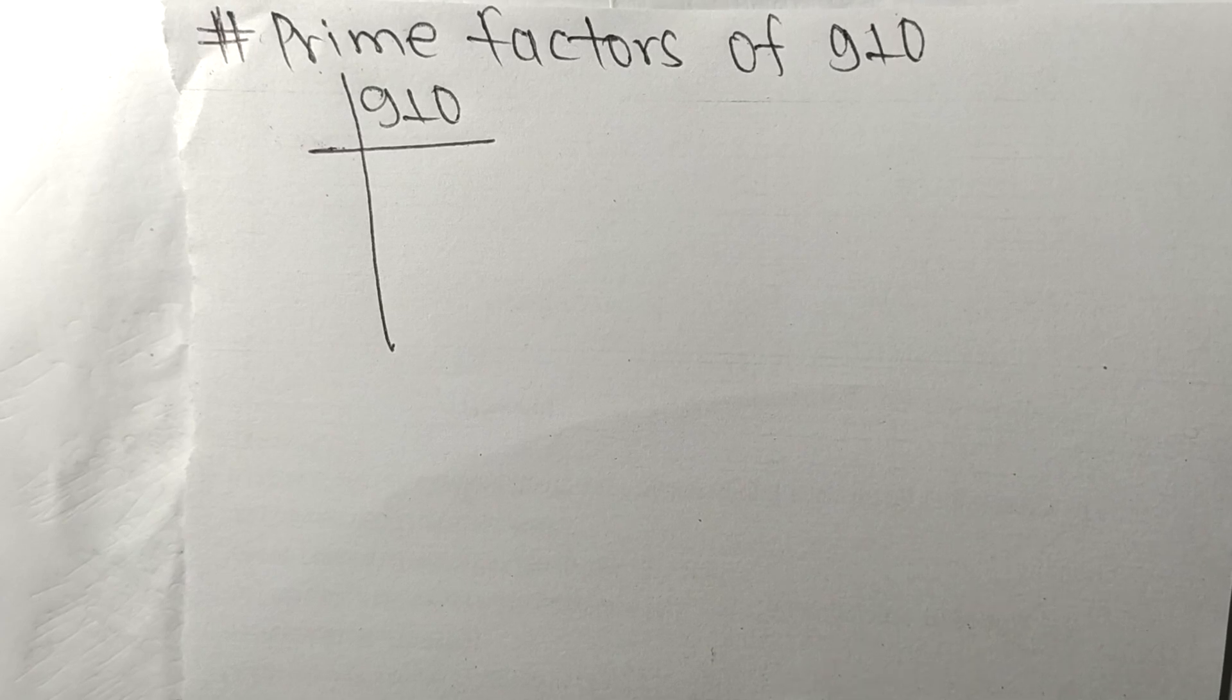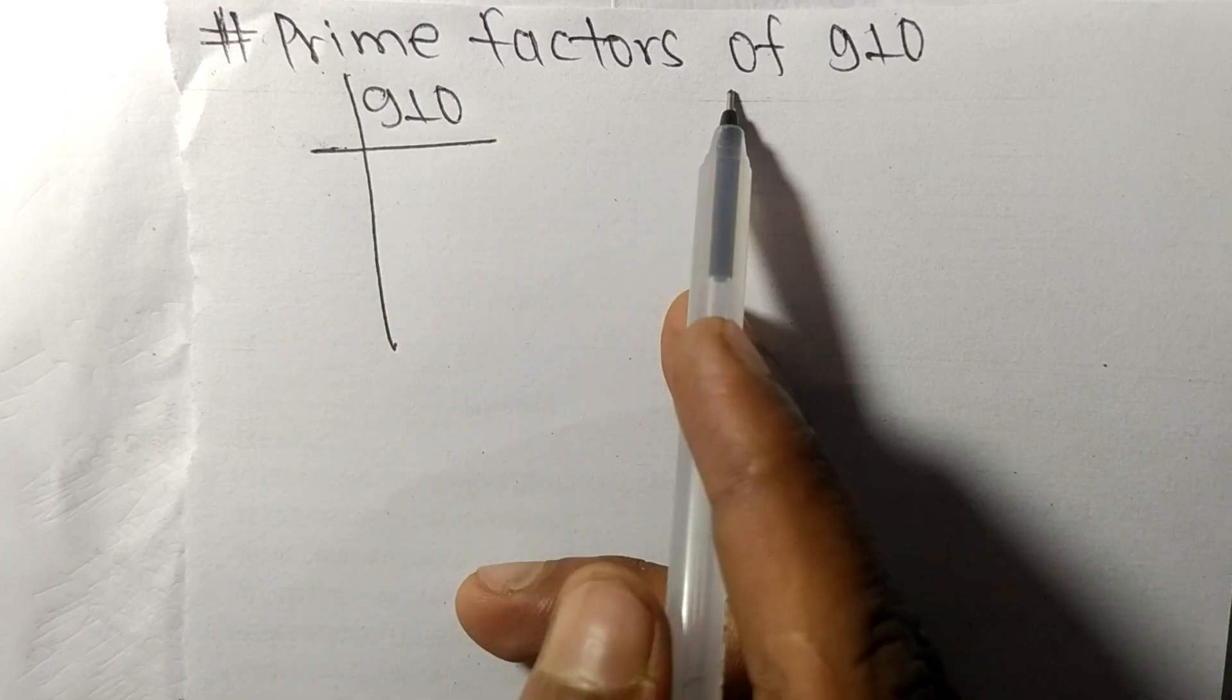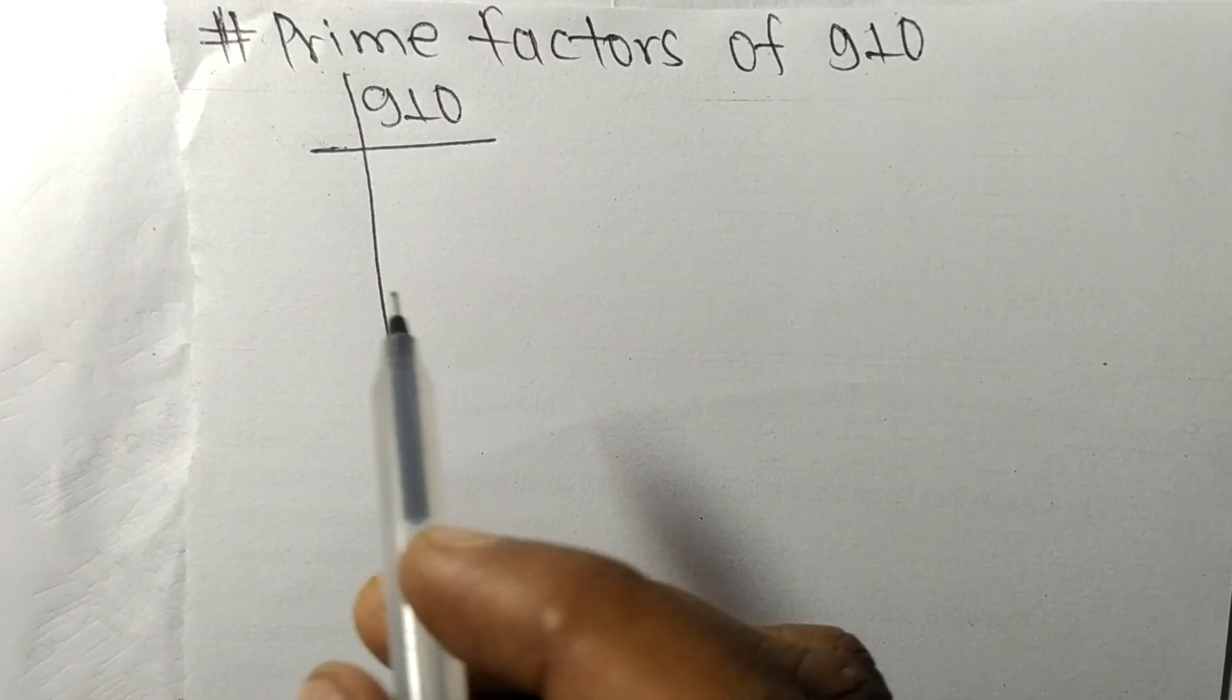So today in this video we shall learn to find the prime factors of 910. It contains zero at last, so this whole number is divisible by 2.